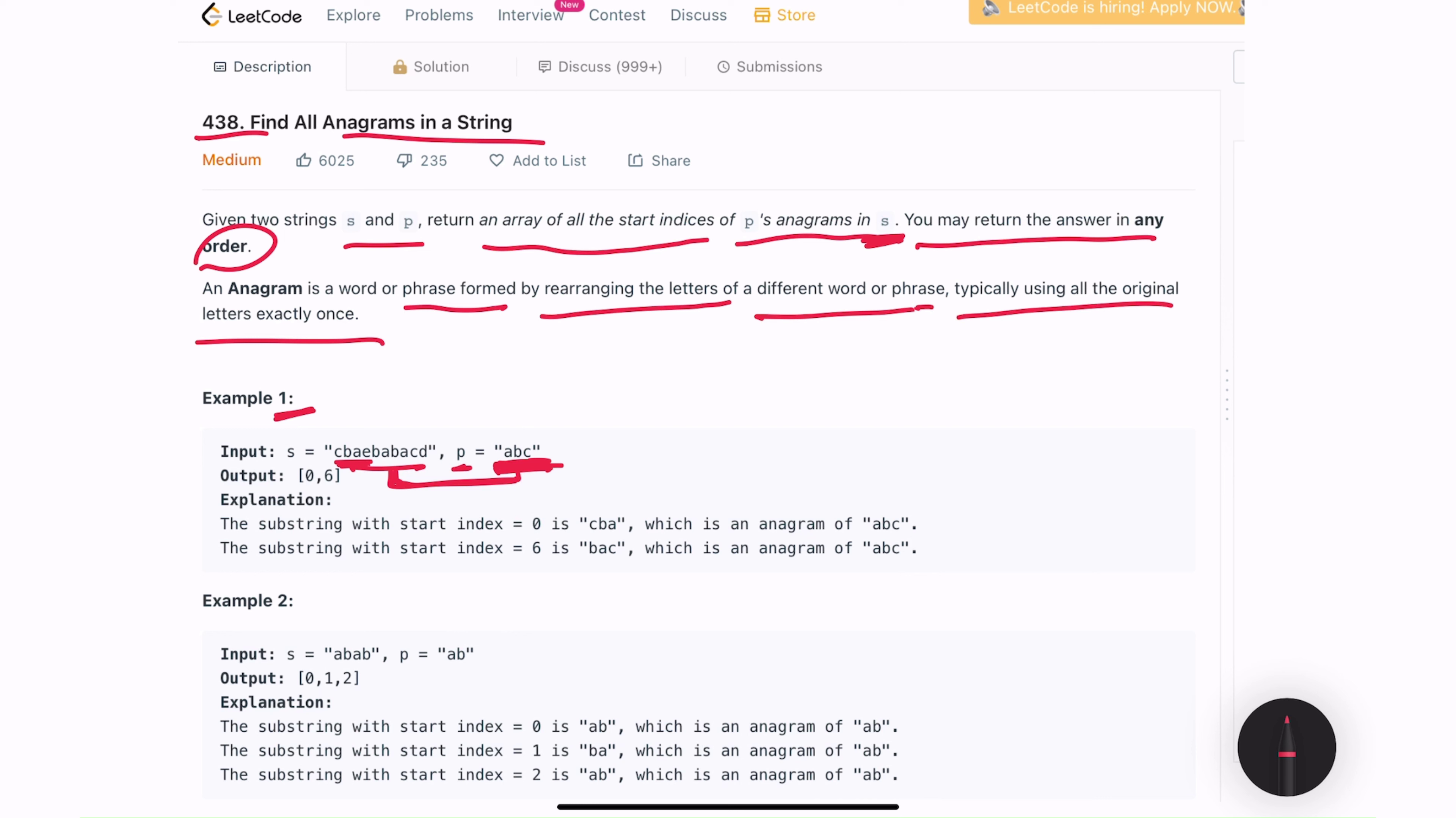So, if you look at the first three characters of s, we have c, b and a, which is an anagram of a, b and c. So, if I arrange it in a different way, I can get the string p. Hence, c, b, a becomes an anagram of a, b and c.